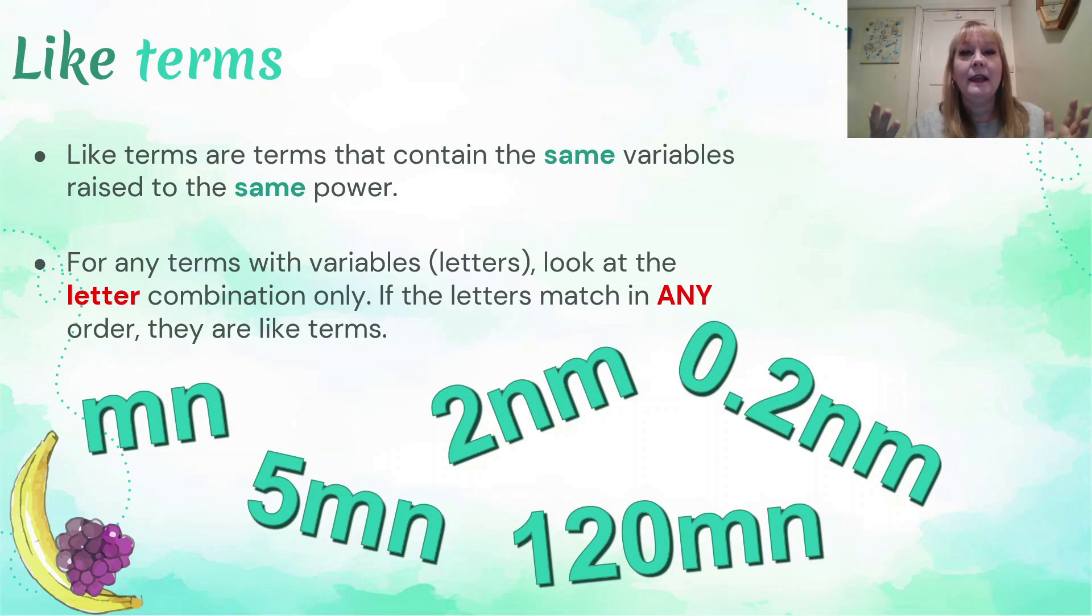So it doesn't matter what order I multiply two numbers in, I'll always come up with the same answer. And it's the same with the algebra letters as well. M times n is the same as n times m. So that means we need to look, because sometimes it's a little bit tricky. We need to look and make sure we've got the same letters, the same powers, and the order is not important.